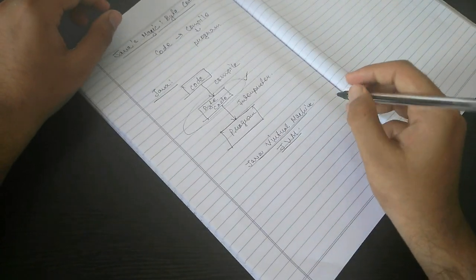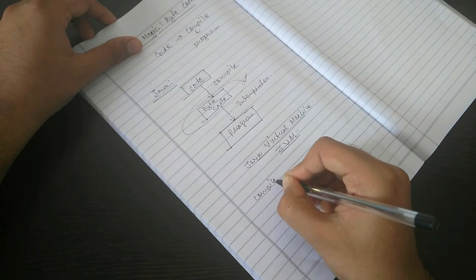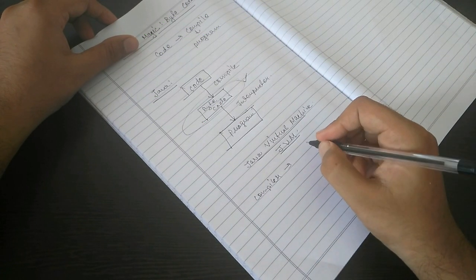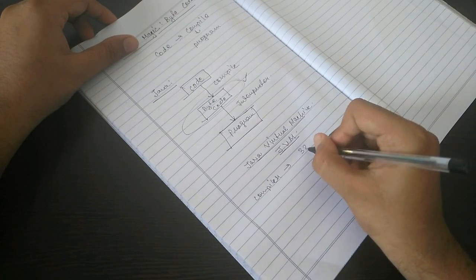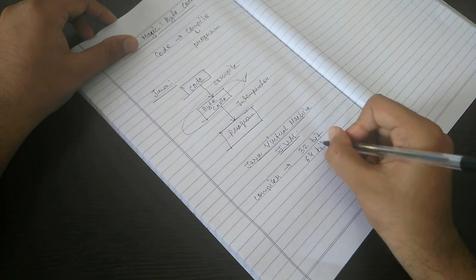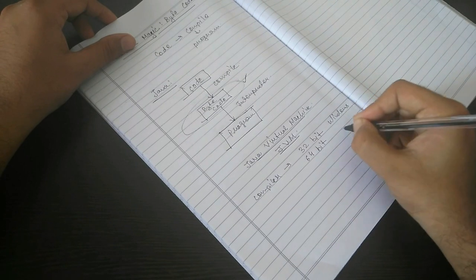When you are compiling code, when you use a compiler to compile code, it uses different technology in 32-bit system, different technology in 64-bit system, it is different for Windows, it is different for Mac.